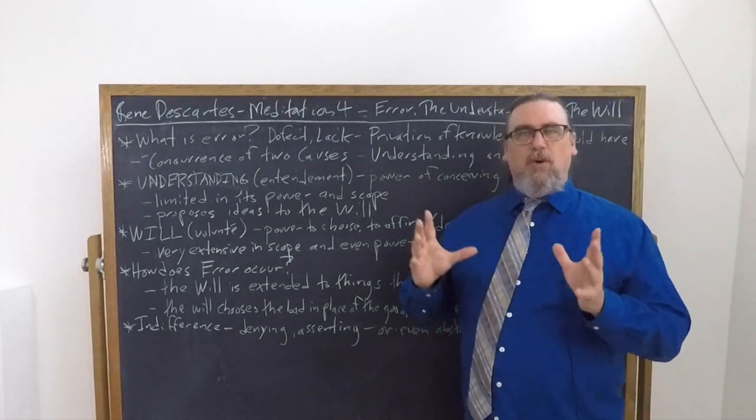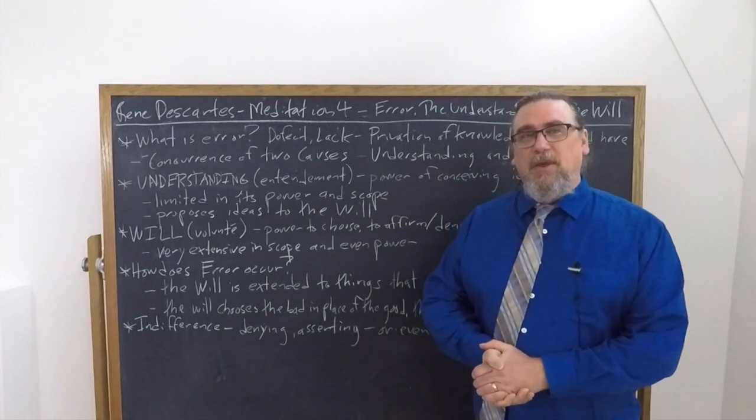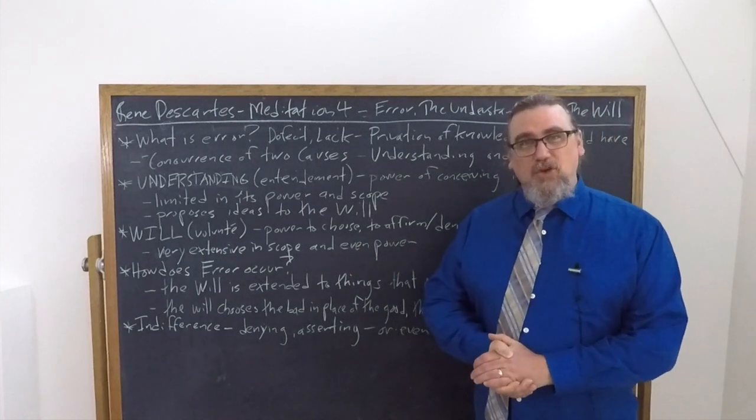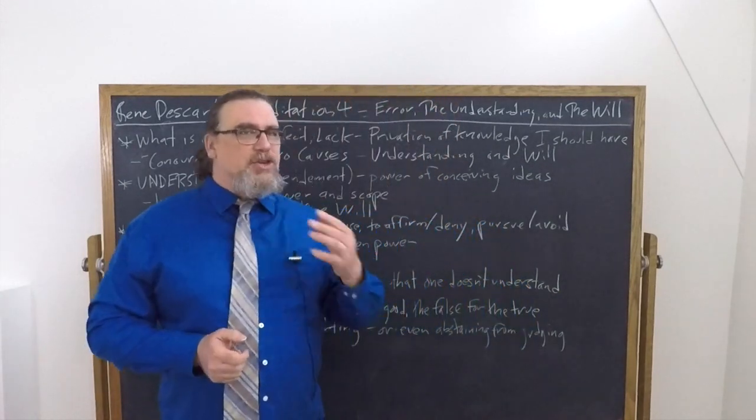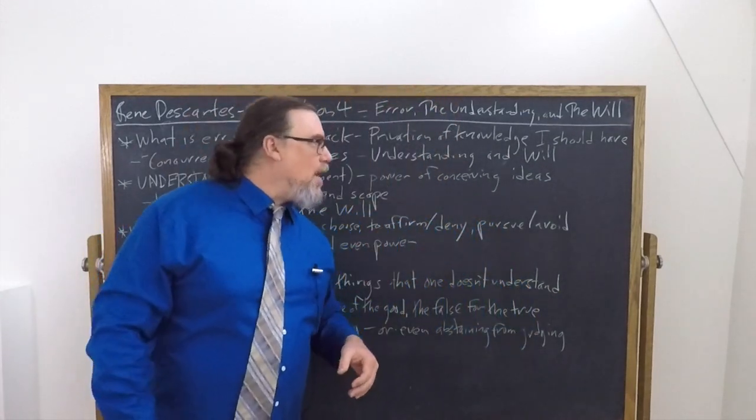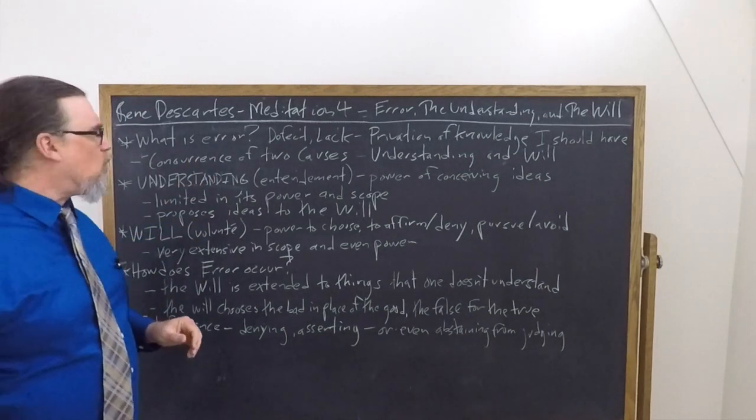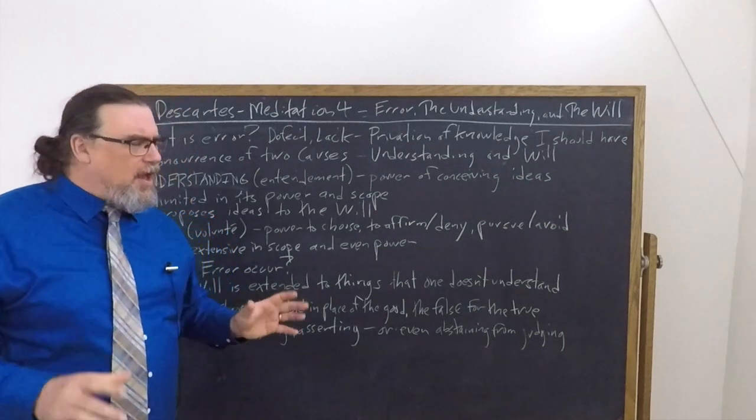So if I think something is good for me, or I desire it because I am judging that it's good, then I pursue it. But I can also choose to reject or avoid it as well. So the will is what does this. The intellect is quite limited in its power and scope, Descartes tells us.